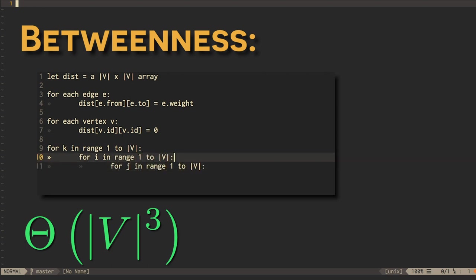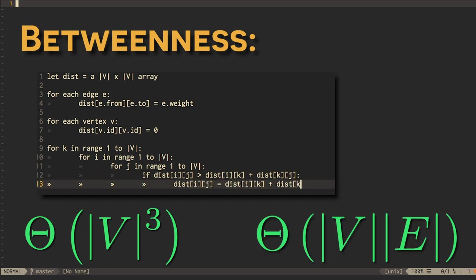If the graph is unweighted, Brandes' algorithm can compute all shortest paths in just order V times E time.